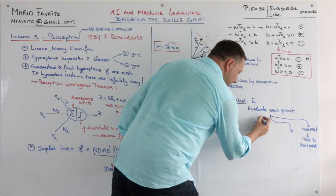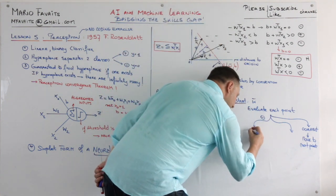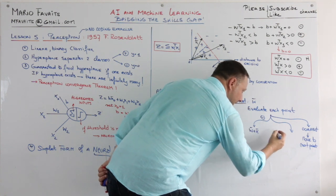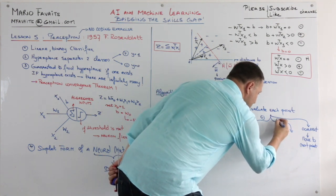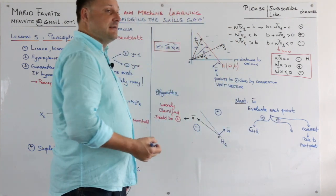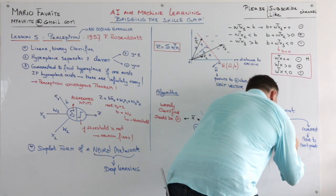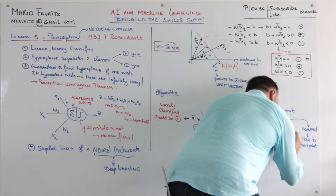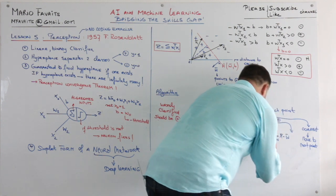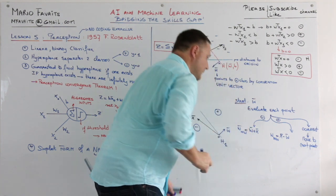If not correct, for example, it is negative and it should be positive, then we're going to add W to X. And if it should be negative and it is positive, then we're going to add X minus W equals W nu. Now that equals W nu.